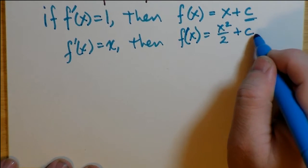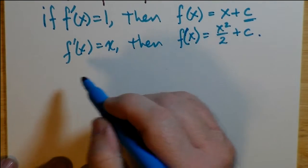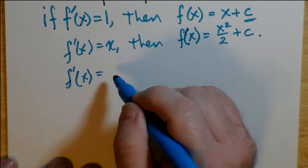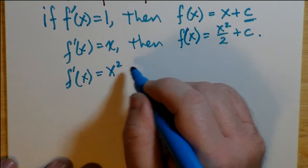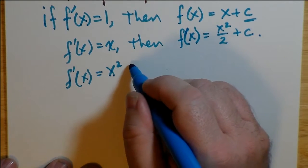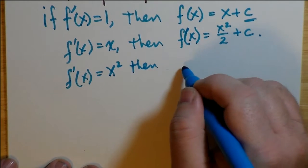Now, if f'(x) is x, then reversing that, x goes to x squared. But if you differentiate that, you get 2x, not x. So then, to hedge that, you say that the anti-derivative of x is x squared over 2.